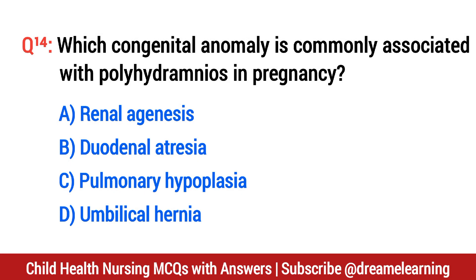Question number 14. Which congenital anomaly is commonly associated with polyhydramnios in pregnancy? The right option is B: duodenal atresia.